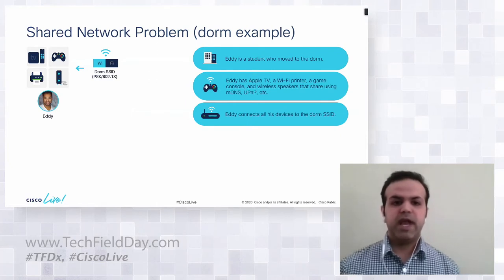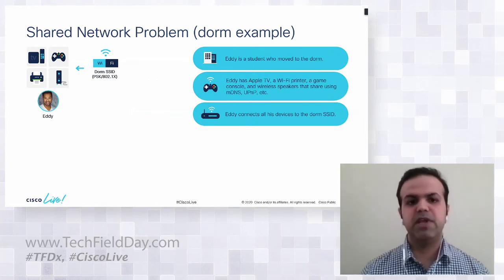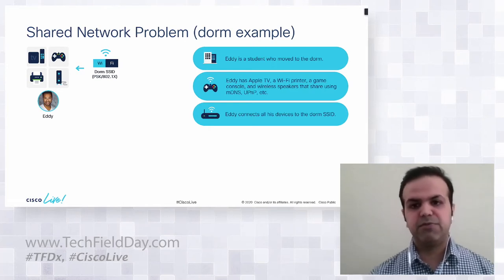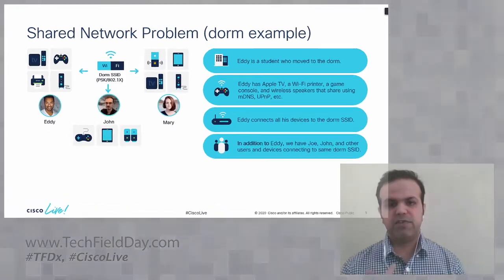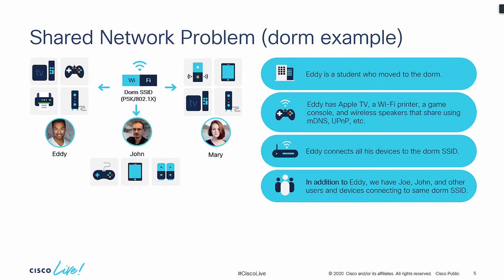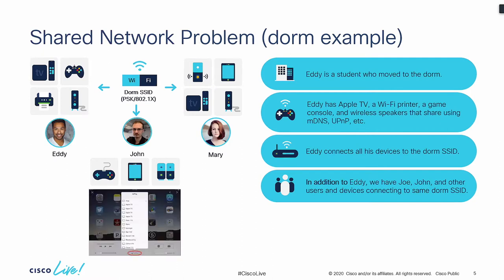First, Eddie will connect his devices to the dorm SSID — it could be PSK or 802.1X depending on the device. But it's not just Eddie connecting; there are other users like John and Mary who are also bringing all their devices and connecting to the same dorm SSID. This is where the problem starts: if Eddie wants to discover his Apple TV, he sees a list of Apple TVs with the same name — Apple TV, Apple TV 1, Apple TV 2 — and he cannot identify which device is his.